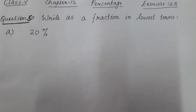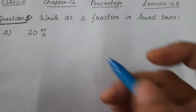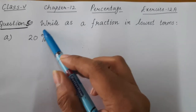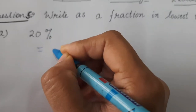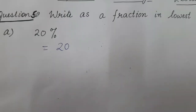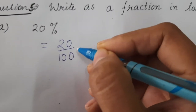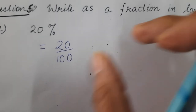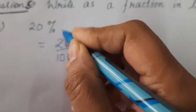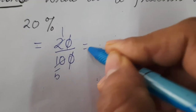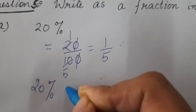Let's start question number five of Exercise 12A. The question asks us to write a percentage as a fraction in lowest terms. For part A, 20 percent — when we remove the percent sign, this becomes 20 upon 100. We reduce this fraction to simplest form: the zeros cancel, giving 2 upon 10, which simplifies to 1 upon 5. So 20 percent in lowest terms is 1 upon 5.